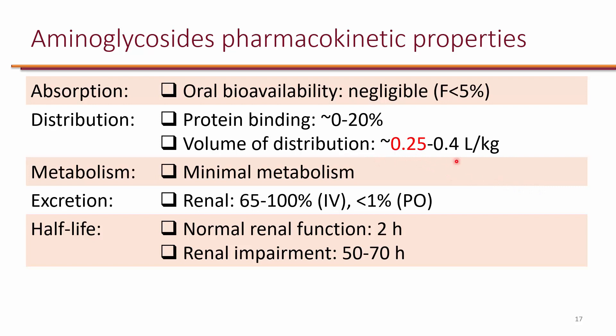For most patients, the volume of distribution of aminoglycosides is 0.25 liters per kilogram, and we will use these numbers in the calculations portion. Aminoglycosides are primarily excreted renally, and the half-life is about two hours in someone with normal renal function. However, in someone with renal impairment, the half-life could be between 50 to 70 hours.